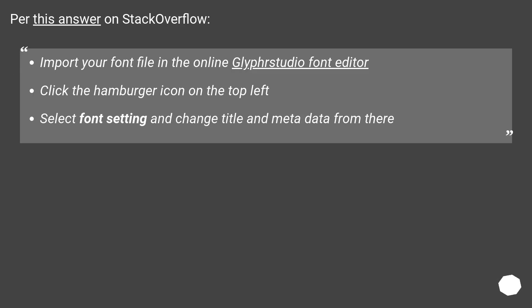Per this answer on StackOverflow: import your font file in the online GIF Studio font editor. Click the hamburger icon on the top left. Select font settings and change the title and metadata from there.